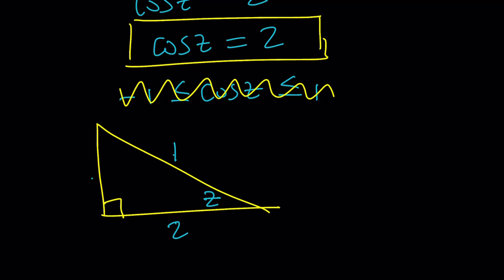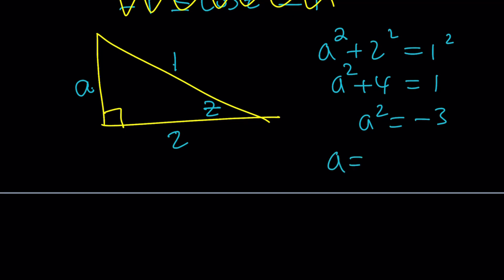So what is the opposite side? Let's use Pythagorean theorem. First of all, let's call this side length a. Ready for the fun part? a squared plus two squared equals one squared. a squared plus four is equal to one. a squared is equal to negative three, and a is plus minus the square root of three i. Awesome.